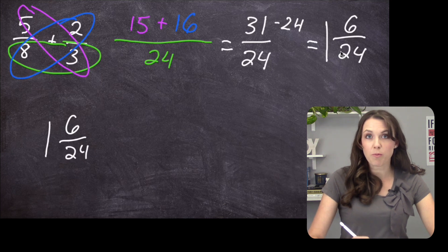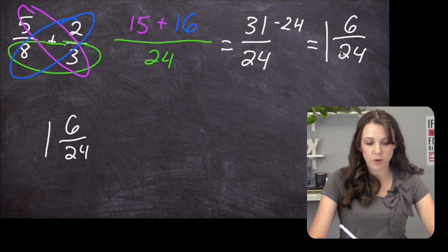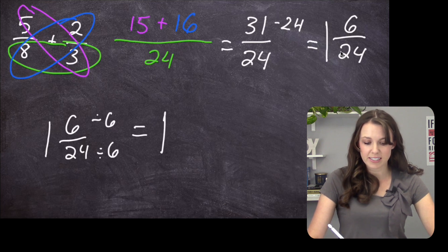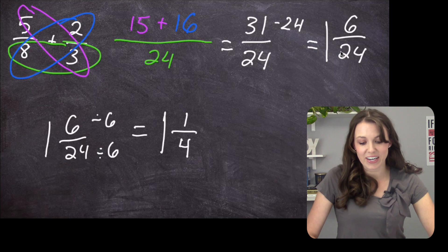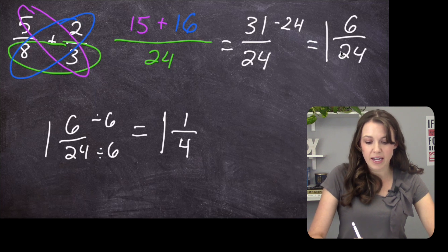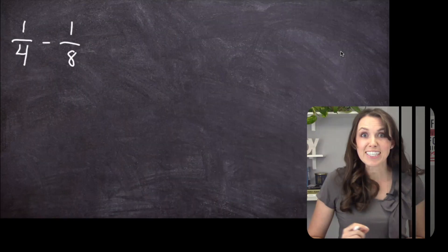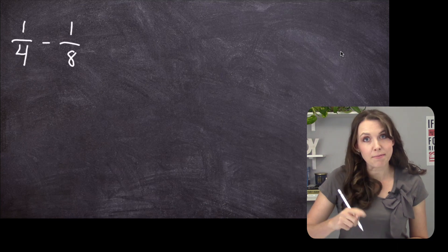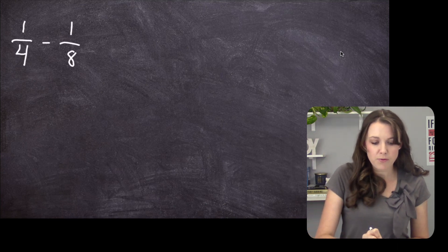Six can go into both 6 and 24, so I'm going to divide by 6. Six goes into 6 one time, and six goes into 24 four times. So my answer here is 1 and 1 fourth.